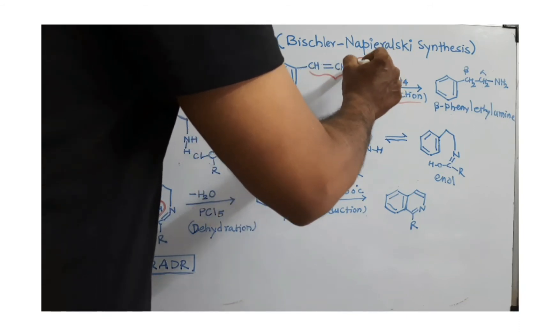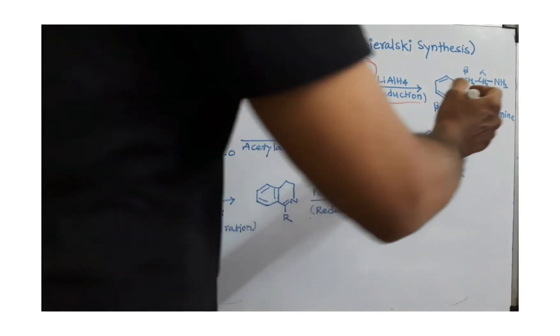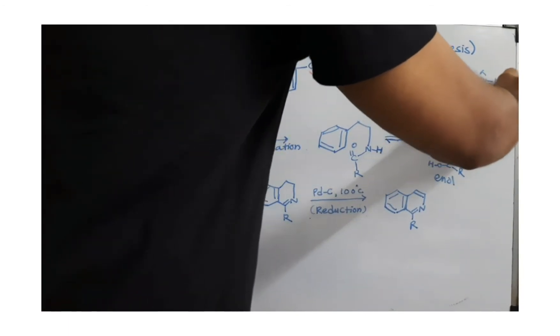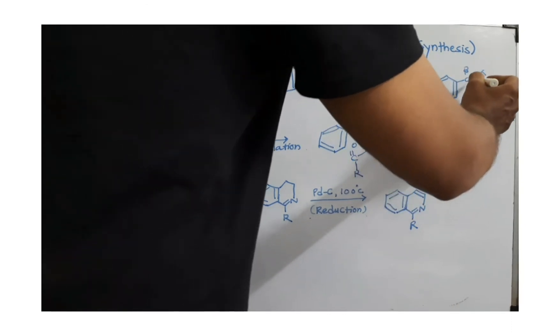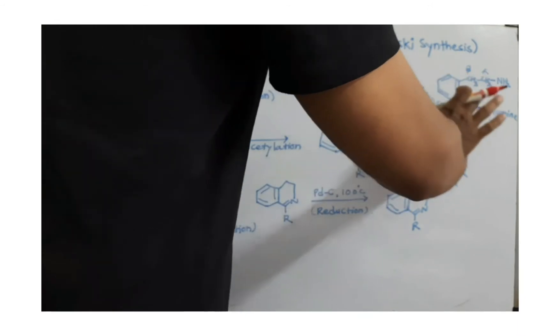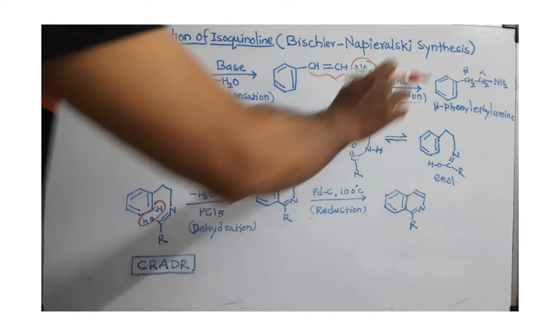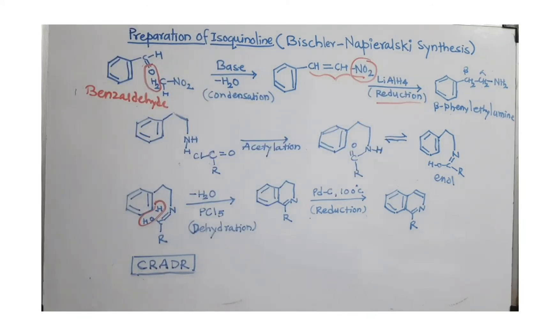And obviously, all of you know that the nitro is converted to the NH2 after reduction. So, we get here an amine. This is nothing but the beta-phenyl ethyl amine. So, this nitrostyrene is converted to the beta-phenyl ethyl amine after reduction using lithium-aluminium hydride.